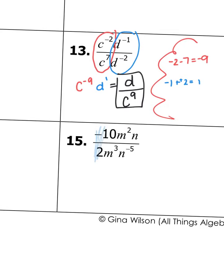Go ahead and try number 15 on your own. First divide your coefficients, then subtract the exponents on your variables. Remember, if anything is negative, flip it and put it in the denominator and it will become positive.